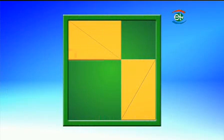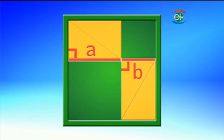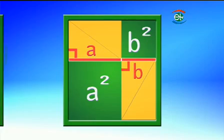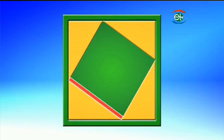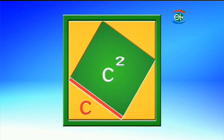If the length of one right angled side is a, and the length of the other right angled side is b, then the area of the square on side a is a², and the area of the square on side b is b². Also, if the length of the hypotenuse is c, the area of the square is c². The areas of these two frames are equal — think about it.